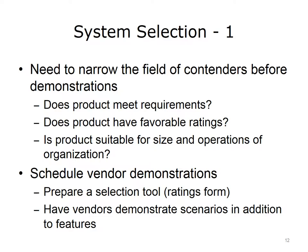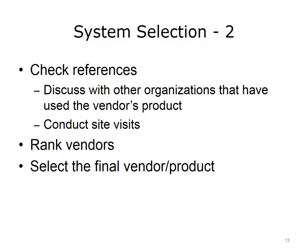During the demonstrations, ask vendors to simulate a variety of clinical scenarios in addition to system features. Requesting the same scenarios from each vendor allows identical workflows to be compared. It is also important to check the vendor's references during the selection process. Find other organizations that have used the vendor's EHR product to get third-party impressions of both the vendor and the product. The vendor may have a list of customers who can serve as references. After product demonstrations have been completed, the organization can begin to rank the vendors using a robust selection tool that employs objective evaluations rather than subjective interpretations.